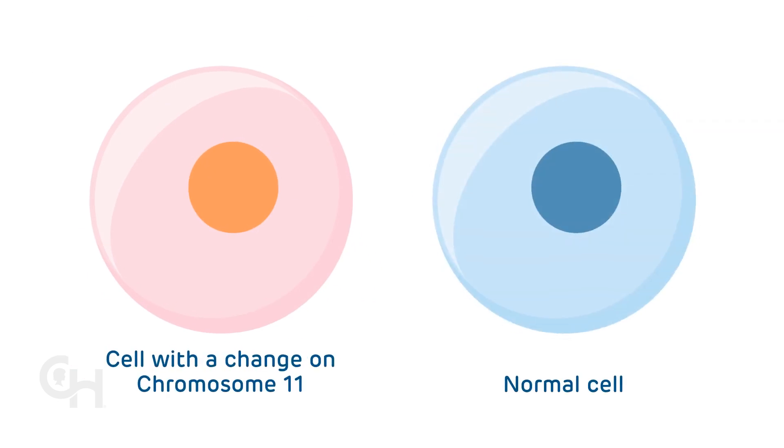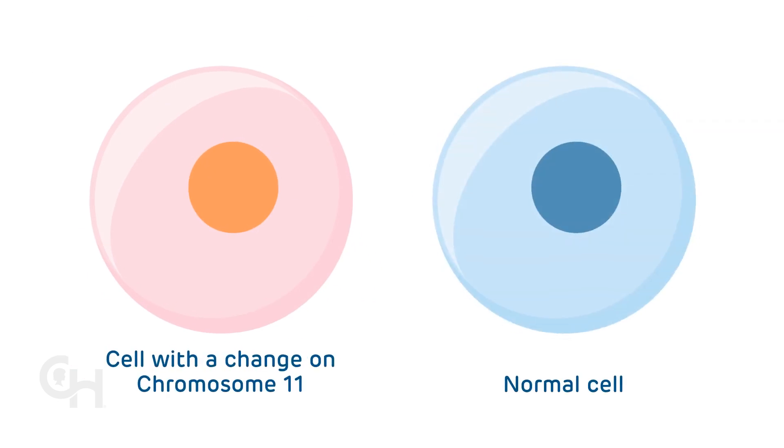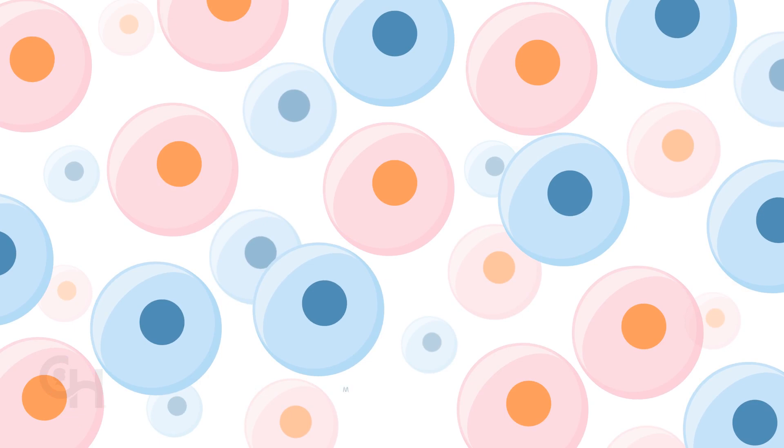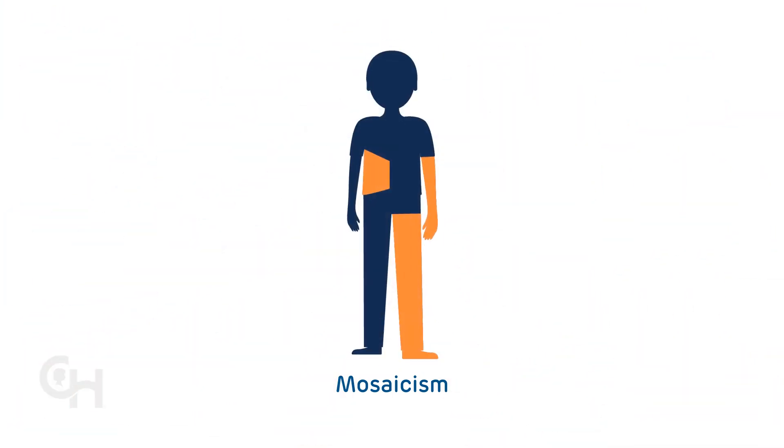In most cases, this change happens in some cells, but not every cell. This situation is referred to as mosaicism, which is when some cells of the body have normal chromosome 11, and other cells of the body have a change on chromosome 11. The features of BWS are a result of the chromosomes in some cells being different from other cells.